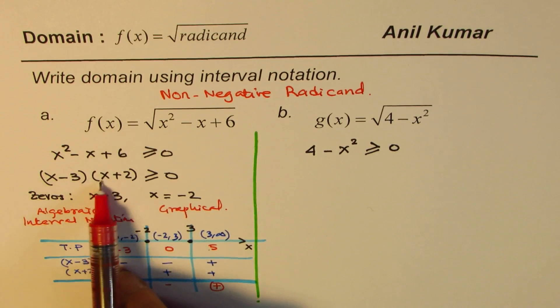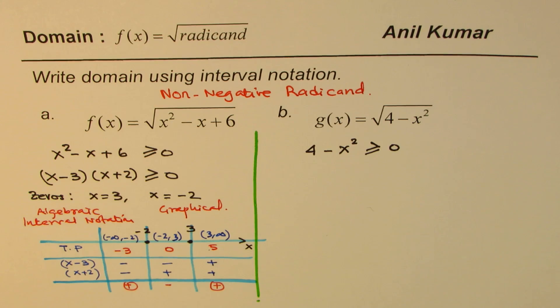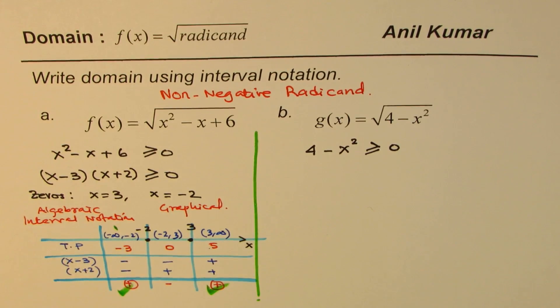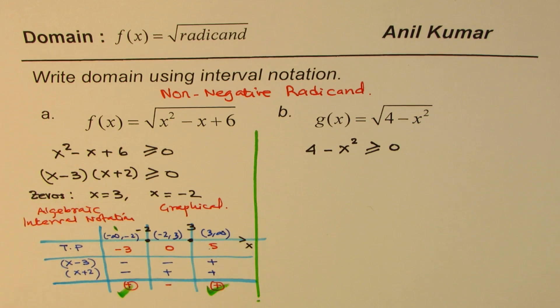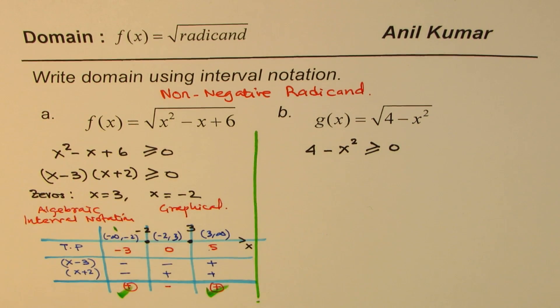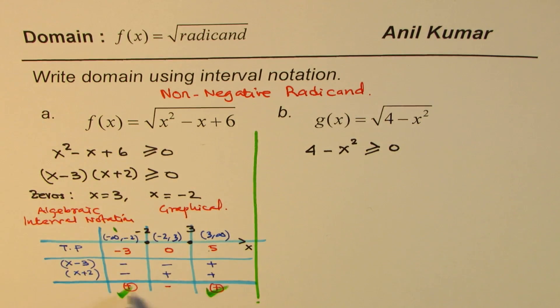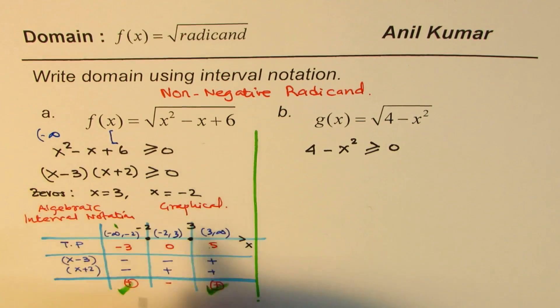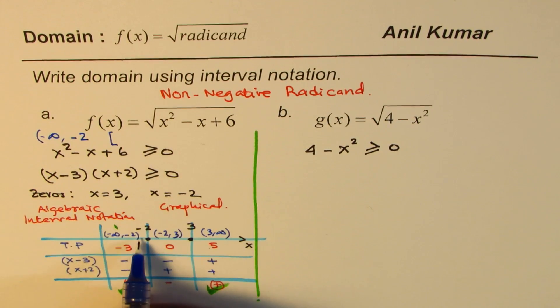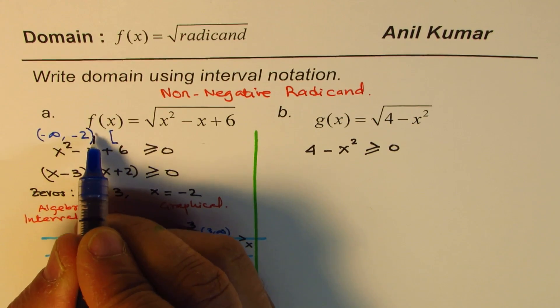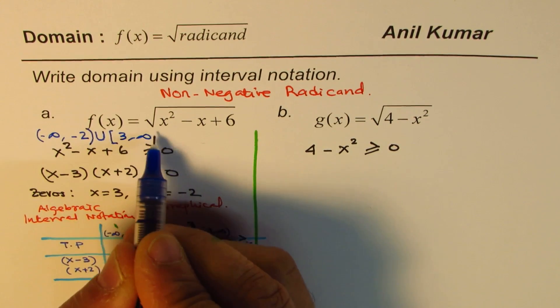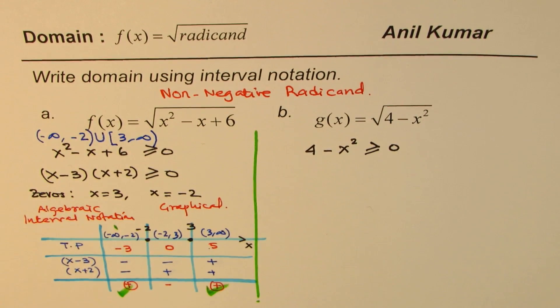And therefore, the interval when this product is greater than or equal to 0 is these two. So that forms the domain of this function. We can write domain of this function as the union of these two. So it is from minus infinity to minus 2. Minus 2 can be included, never include infinity. Union, the other one, which is from 3 to infinity. So that becomes the domain of this particular function.